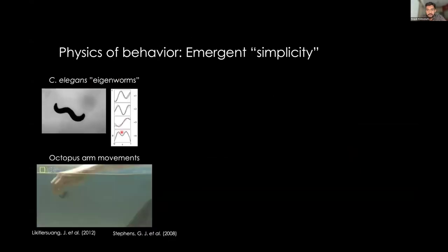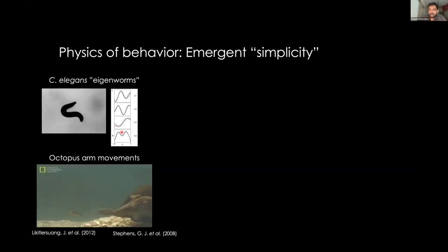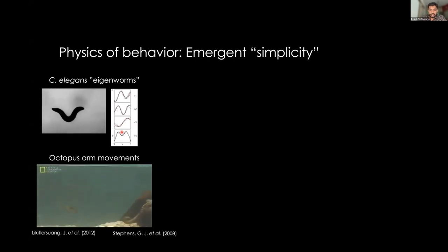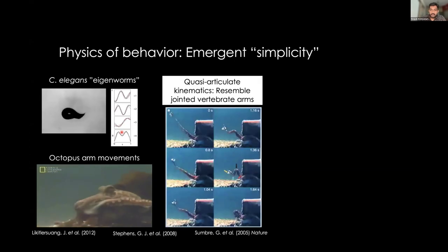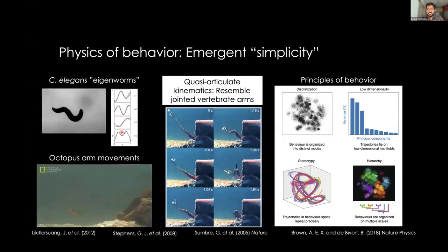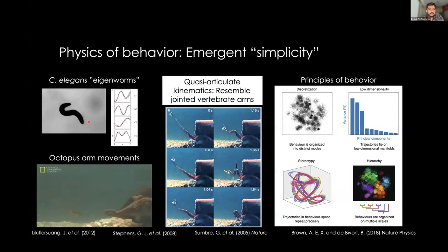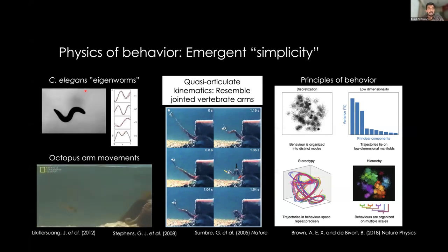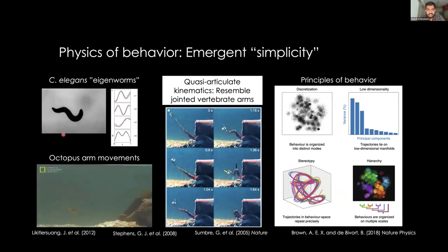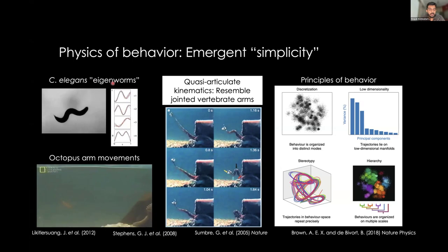It's really an exciting time to study the physics of behavior. Because of new tools and new kinds of analysis and AI tools, we can really understand behavior in a very wide range of organisms, all the way from wiggling worms to large octopuses. One of the common themes that's emerged is this idea of low dimensionality or emergent simplicity in behavior. A really neat example is the crawling of C. elegans — you can understand the behavior of this organism crawling on an agar plate in a very low dimensional sense using just four different shape modes, which they call eigenworms.